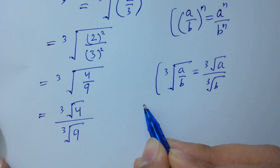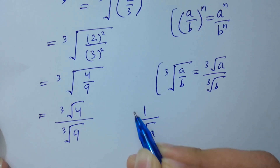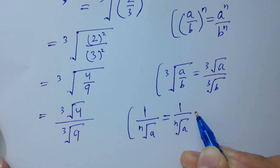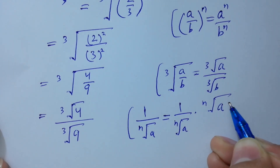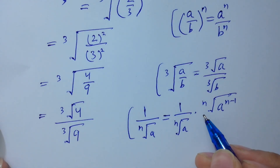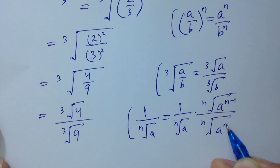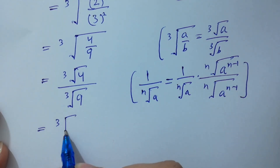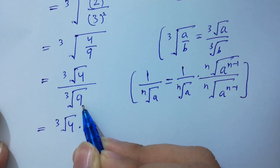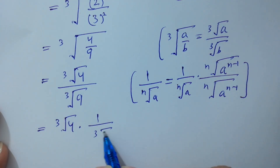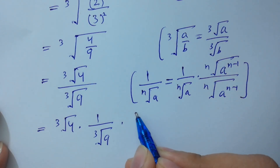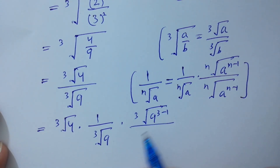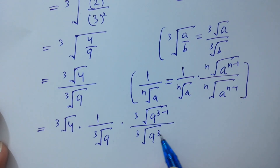Since 1 over n root a is equal to n root a to the power n minus 1 over n root a to the power n minus 1, so cube root 4 remains as it is, and 1 over cube root 9 becomes cube root 9 to the power 3 minus 1 over cube root 9 to the power 3 minus 1.